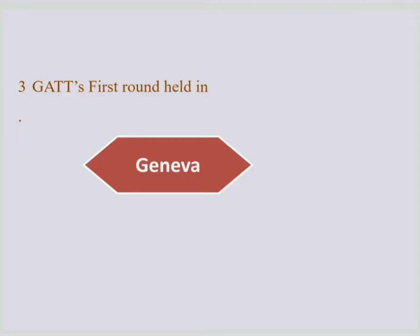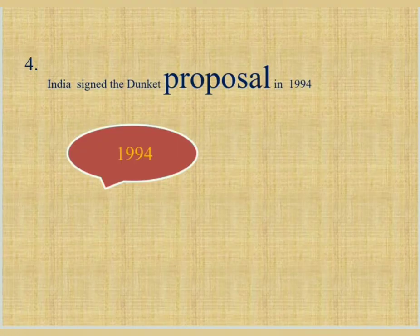Question 3: GATT's first round was held in Geneva. Question 4: India signed the Dunkel Proposal in 1994.